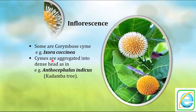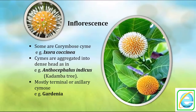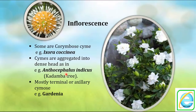In some plants the cyme gets aggregated to form a head-like inflorescence — example is Anthocephalus indicus, the kadamba tree, where many flowers arise on this head. Some plants have terminal and axillary cymes found on the branch — example is Gardenia.